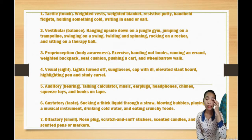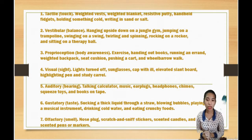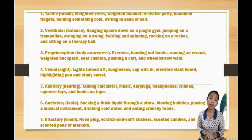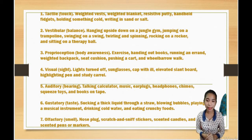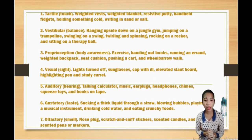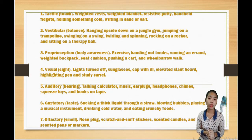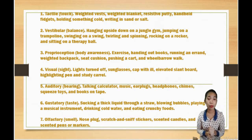The first sensory type is tactile, or touch. Examples include weighted blankets, resistant holding, hand-held widgets, holding something cold, or writing in sand or salt. The second is vestibular, or balance. Examples include hanging upside down on a jungle gym, jumping on a trampoline, swinging on a swing, twirling and spinning, rocking on a rocker, and sitting on a therapy ball.